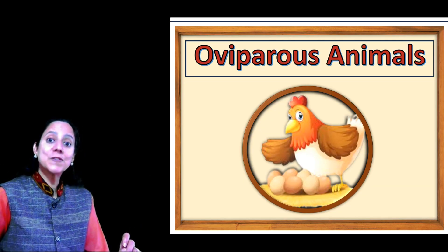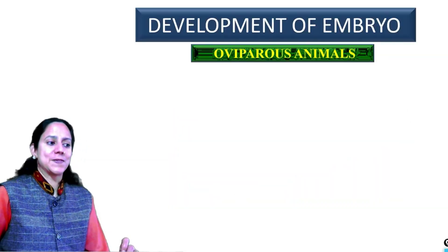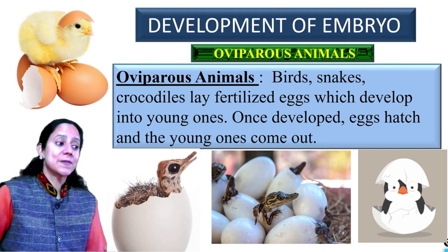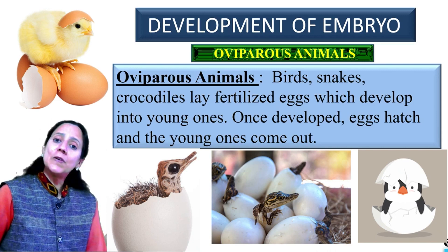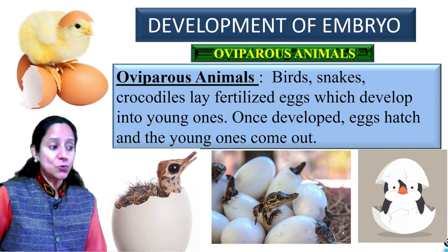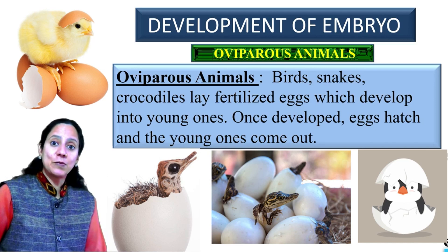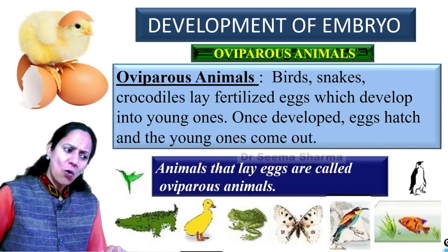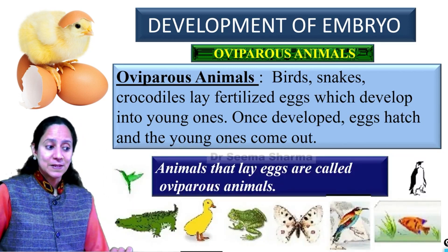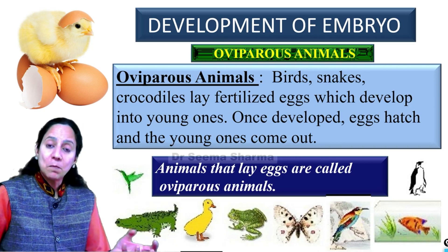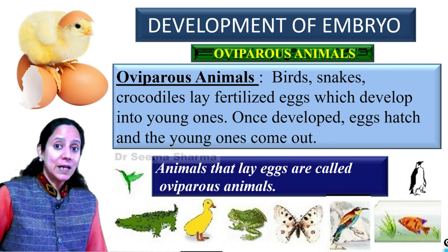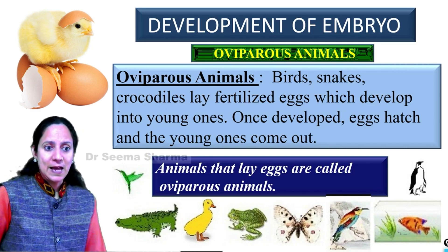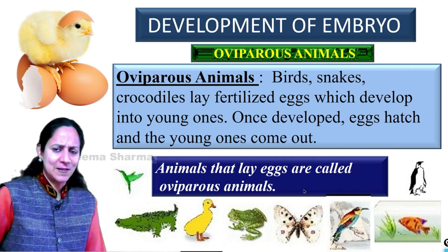Now let us learn about another type of embryo development: oviparous. Oviparous animals — birds, snakes, crocodiles — lay fertilized eggs which develop into young ones within that fertilized egg, and once development is complete, the young one hatches and comes out. So all those animals that lay eggs from which the young one hatch are called oviparous animals, and we have a long list of oviparous animals too.